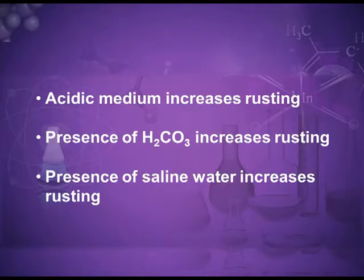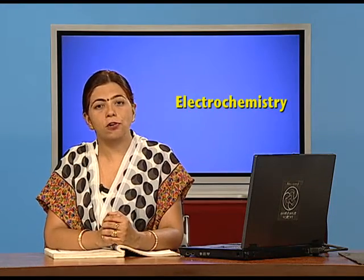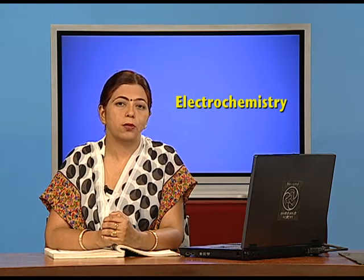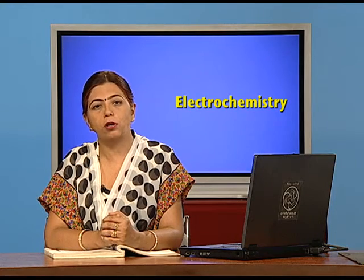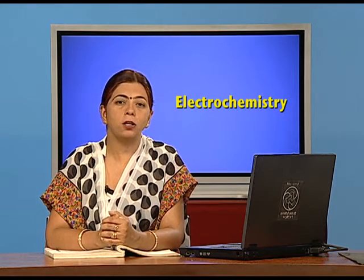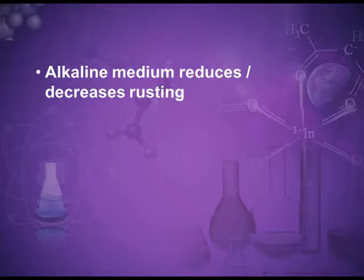Conditions that increase rusting include: an acidic medium, saline water (which has many ions), and increased concentration of CO₂ (which dissolves in water to form carbonic acid, providing H⁺ ions). However, an alkaline medium reduces rusting because it produces OH⁻ ions that neutralize the protons (H⁺ ions) required for rusting.